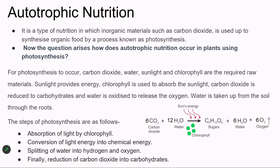Carbon dioxide is taken in through minute pores present on the leaf called stomata. Water is taken up from the roots and reaches the leaves. Sunlight is absorbed by the leaf with the help of chlorophyll. Chlorophyll is the green color pigment present in the leaf which helps in the absorption of sunlight.